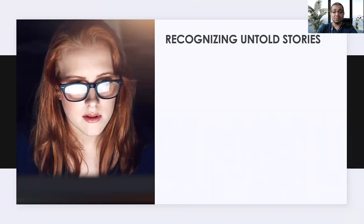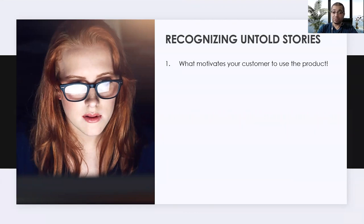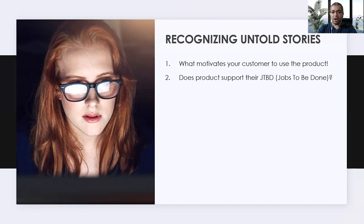Moving to the next topic: how you identify or recognize untold stories. When you interact with customers, there will be things they may not speak up about, but you still want to find out. You may want to find out what motivates your customer to use a particular product or feature — plan your questions accordingly. Another part: does your product cover the basic jobs-to-be-done for the customer? They may not speak up, but it's your job to find out and build in the missing functionalities.